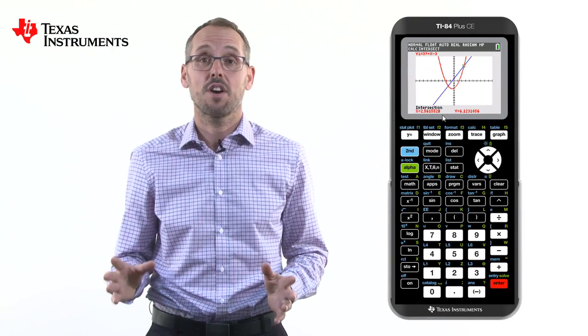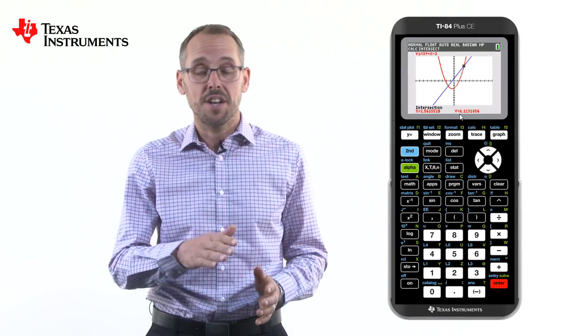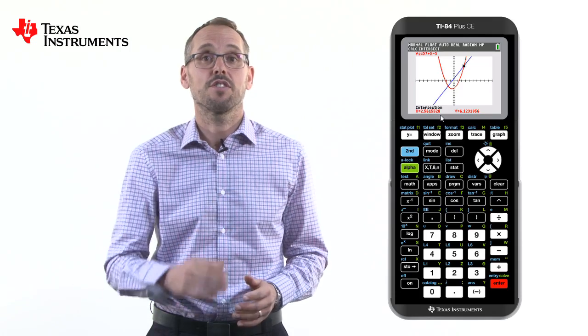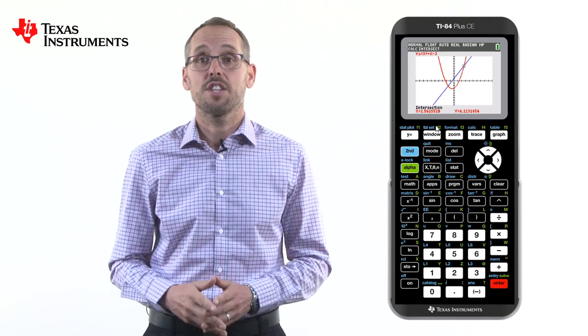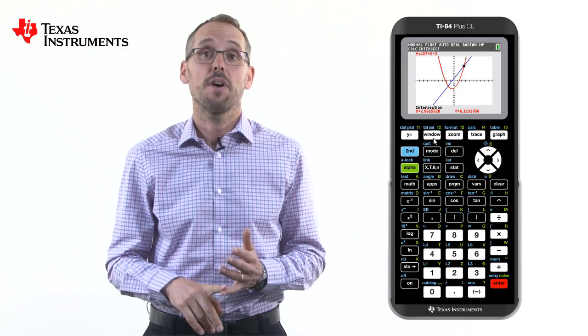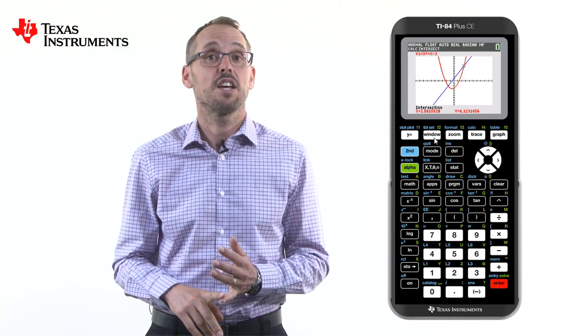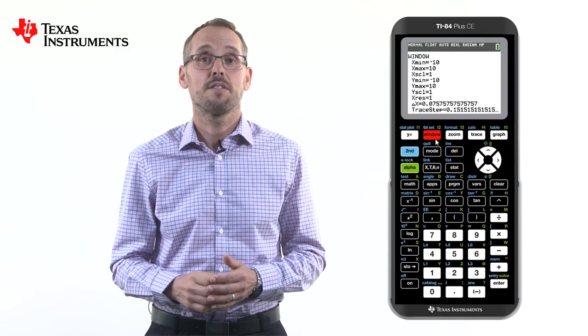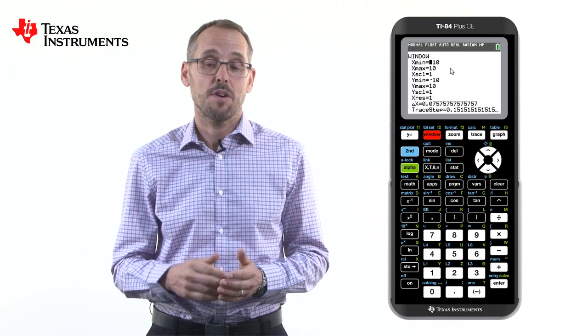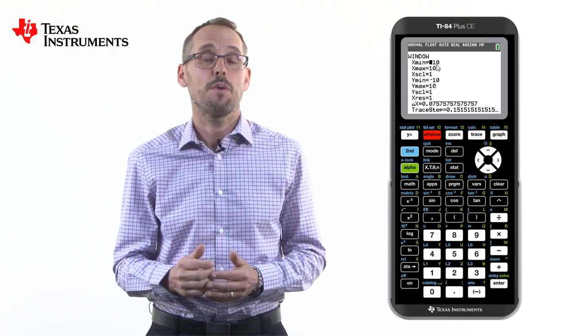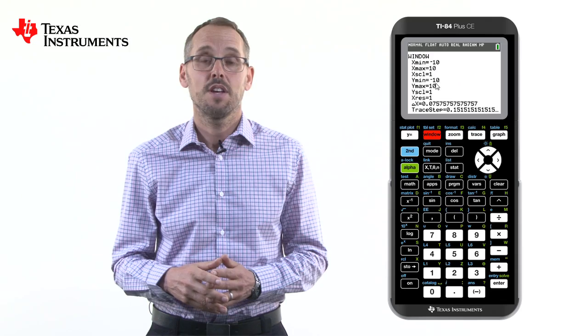Up until now, we've seen the graphs on an axis of minus ten to ten in both directions. If we want to adjust this, we can do this in two ways. Firstly, by going into window which is located on the top row of buttons and that allows us to change both the minimum and maximum of both the x and y axes.